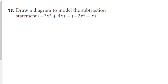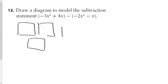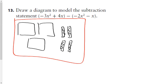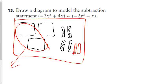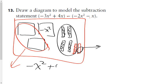Draw a diagram to model the situation. Negative 3x-squared will be three of these tiles; positive 4x's will be these four here. Now we're subtracting 2x-squared minus 6x, so I put a red box and remove two x-squareds. I can't directly remove a negative x, so I make a zero pair — removing a negative x actually increases the value. When I remove an x it increases by a positive x, so my final answer will be negative 1x-squared plus 5x.